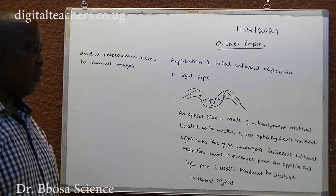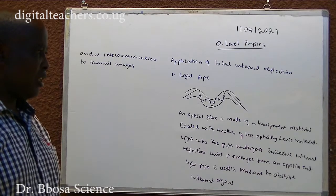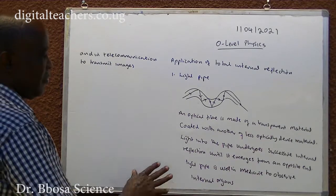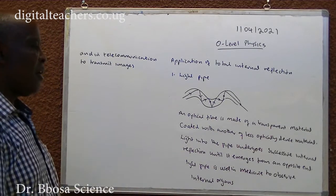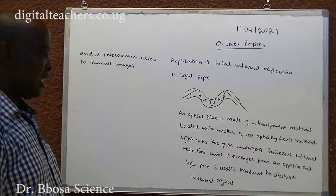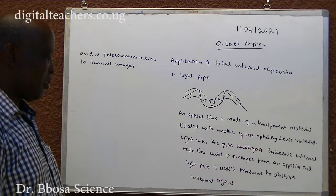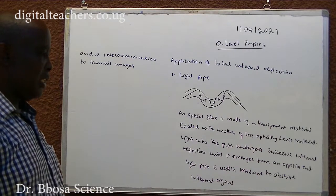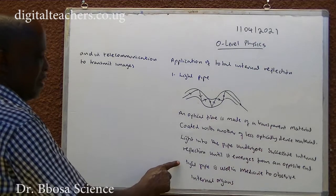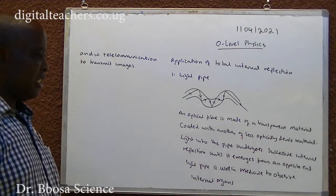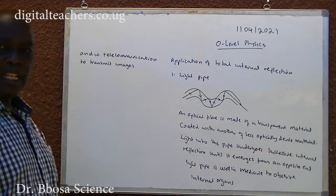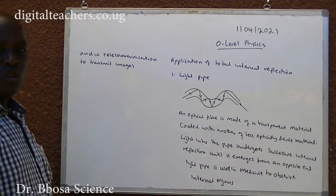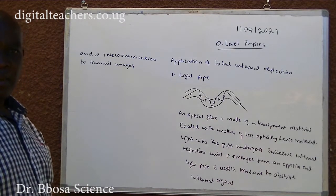Application 1 — Light pipe: An optical fiber is made of a transparent material coated with another less optically dense material. Light entering the pipe undergoes successive total internal reflections until it emerges from the opposite end. Light pipes are used in medicine to observe internal organs, and in communications to transmit images.